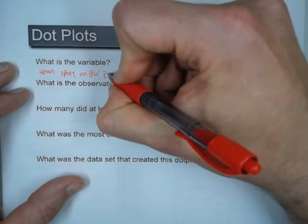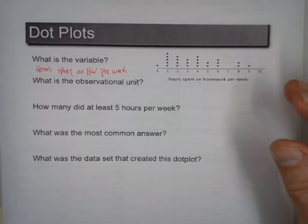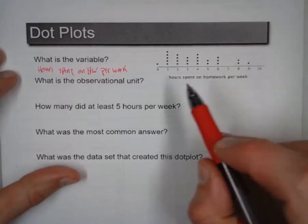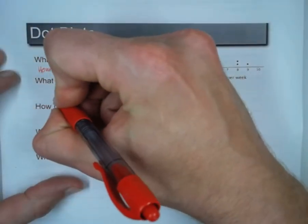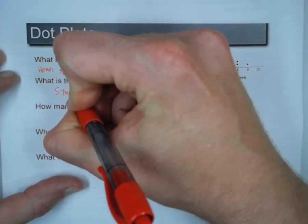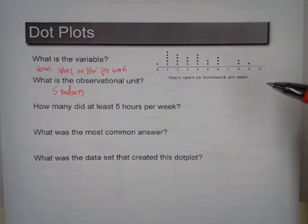And if the dot plot doesn't tell you that, then you're going to have a hard time figuring out what is that variable. Now, what is the observational unit? Well, let's see. Hours spent on homework. Well, who spends hours on homework? Odds are we're talking about students. We're getting these from students.